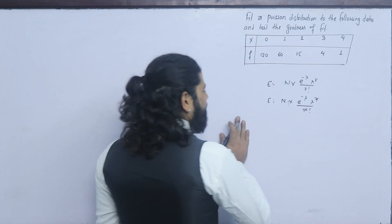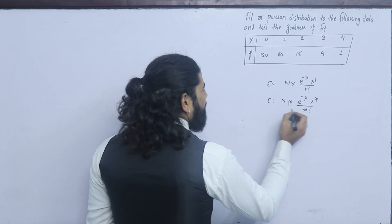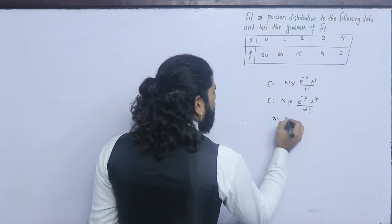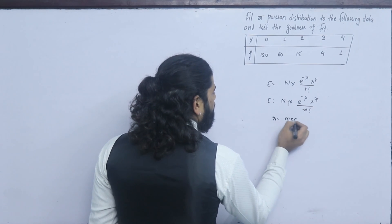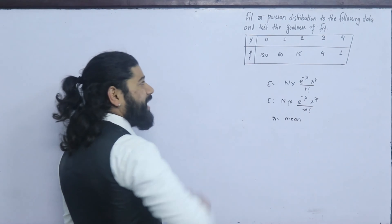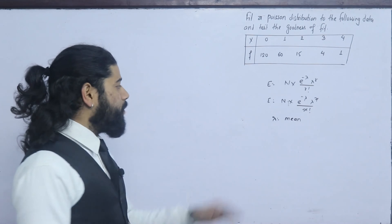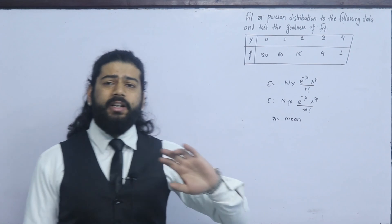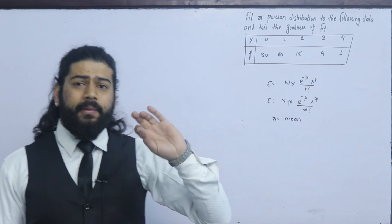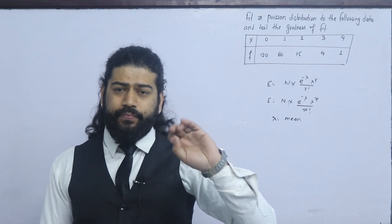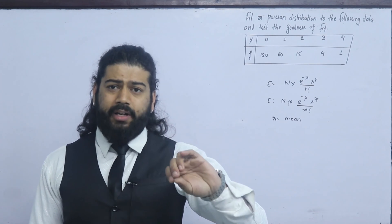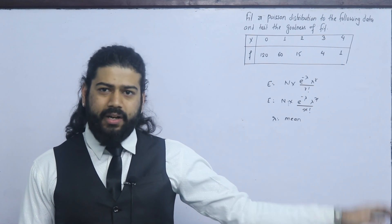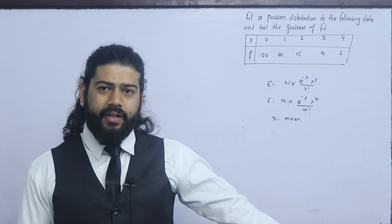Now in this case, lambda is the mean. The question mentions this as the parameter. In the binomial situation there is a p parameter. The degree of freedom requires you to do minus 1 for each parameter estimated.